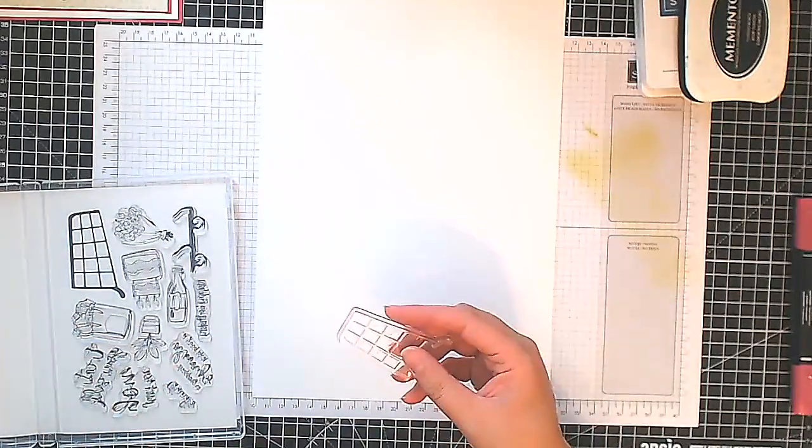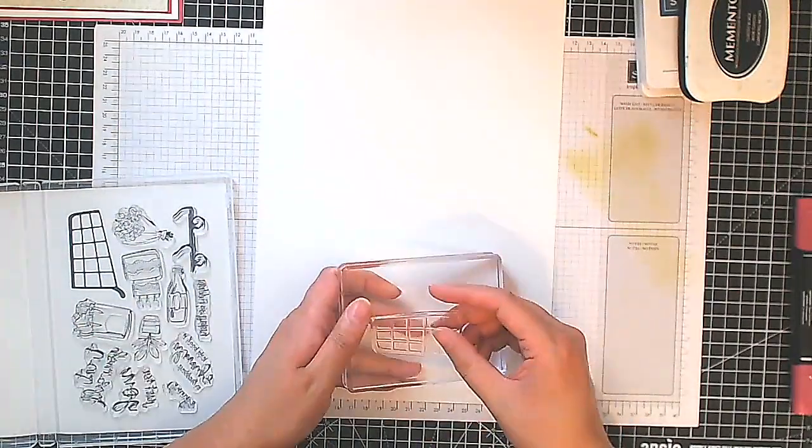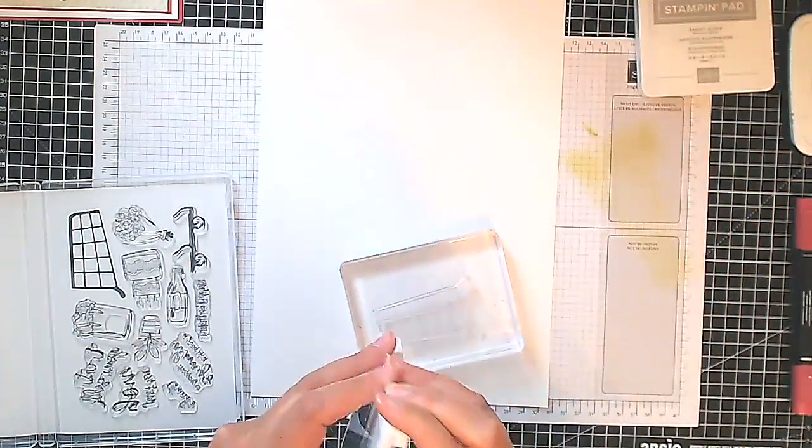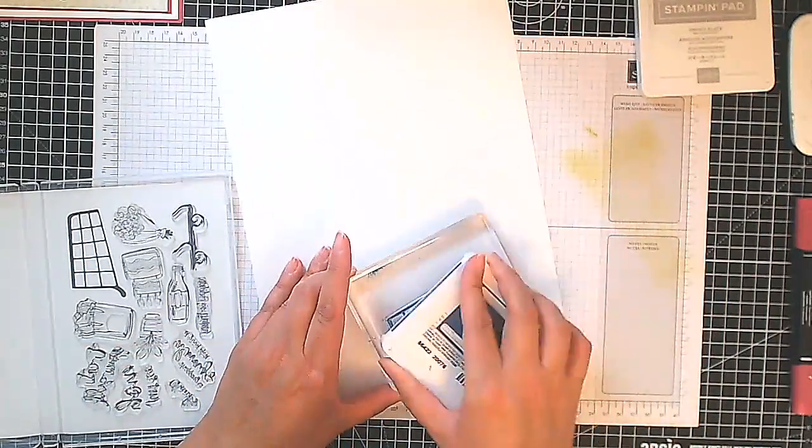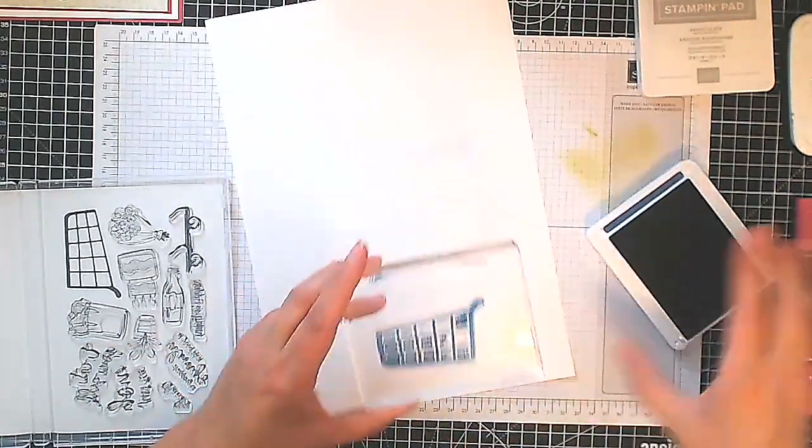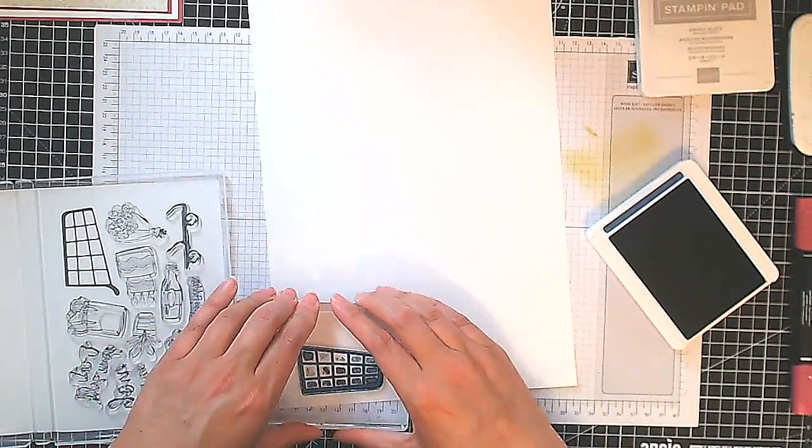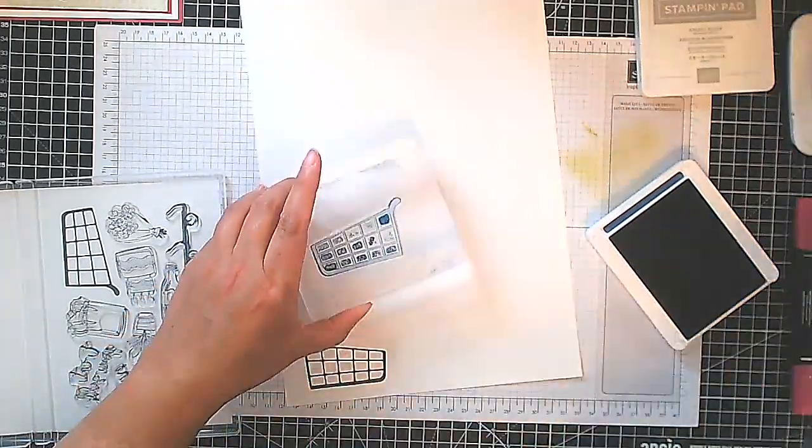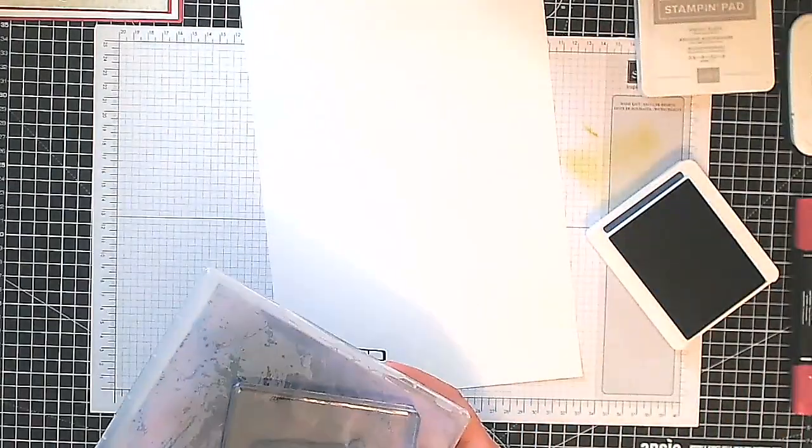It's that trolley full of lots of goodies and we're going to start off with some stamping. You can see here the stamps I'm going to use are called Attention Shoppers and we're going to stamp our trolley here with Misty Moonlight ink.